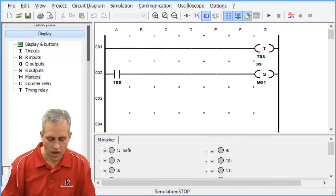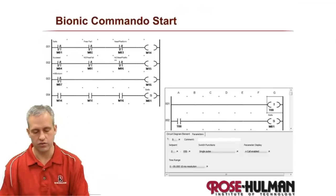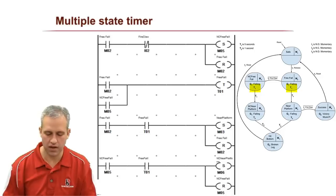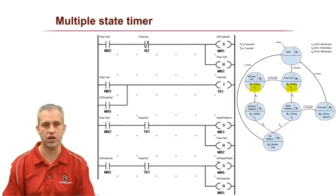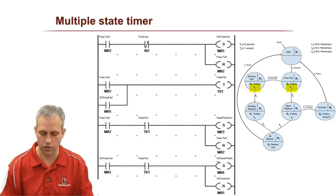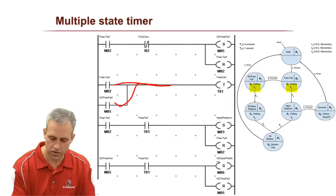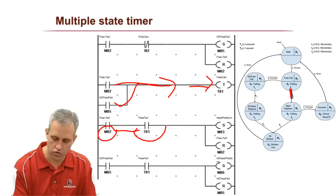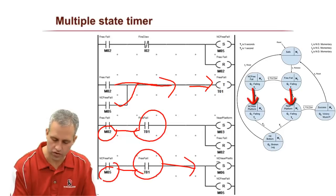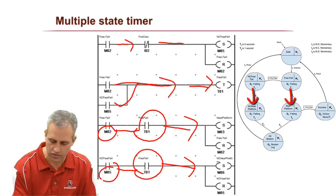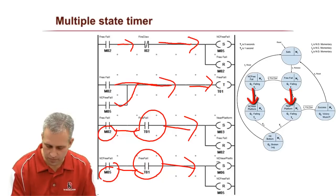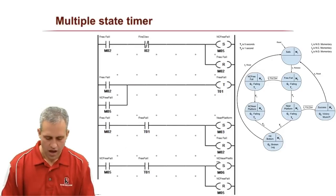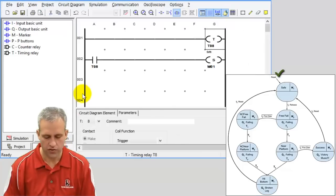The other thing to note is that there are two things that might control timer one — it could come from the state where you're falling, or from the state where you're falling with no claw. There are two things that might control marker one, and that's fine. Whenever two things are controlling something it's an OR, so if either of them is on, trigger timer one. Then if you're in marker two when it goes off do one thing, and if you're in marker five when it goes off do something else.